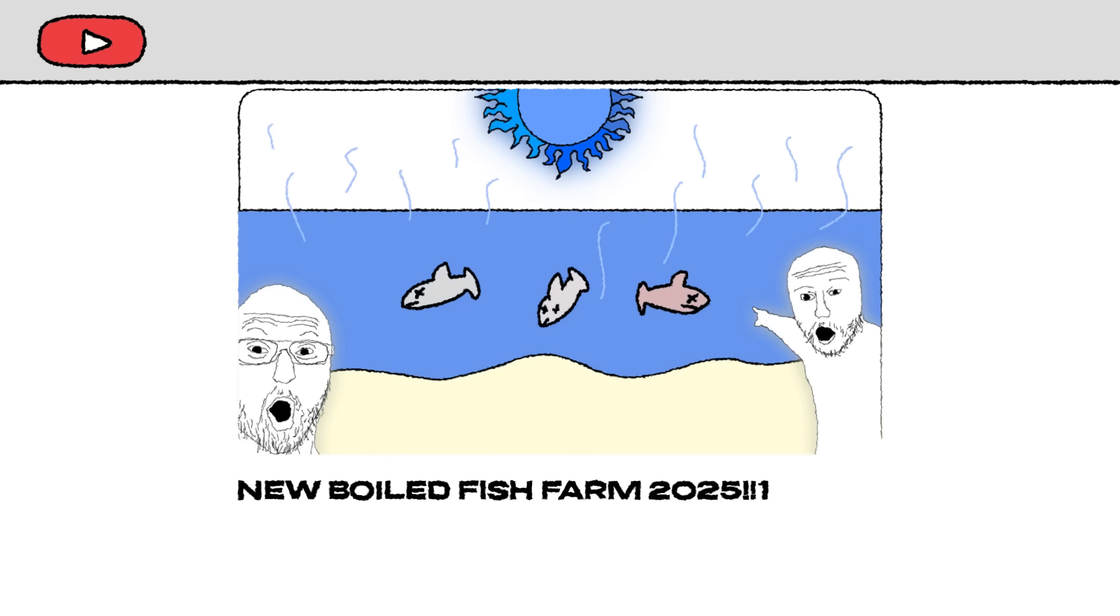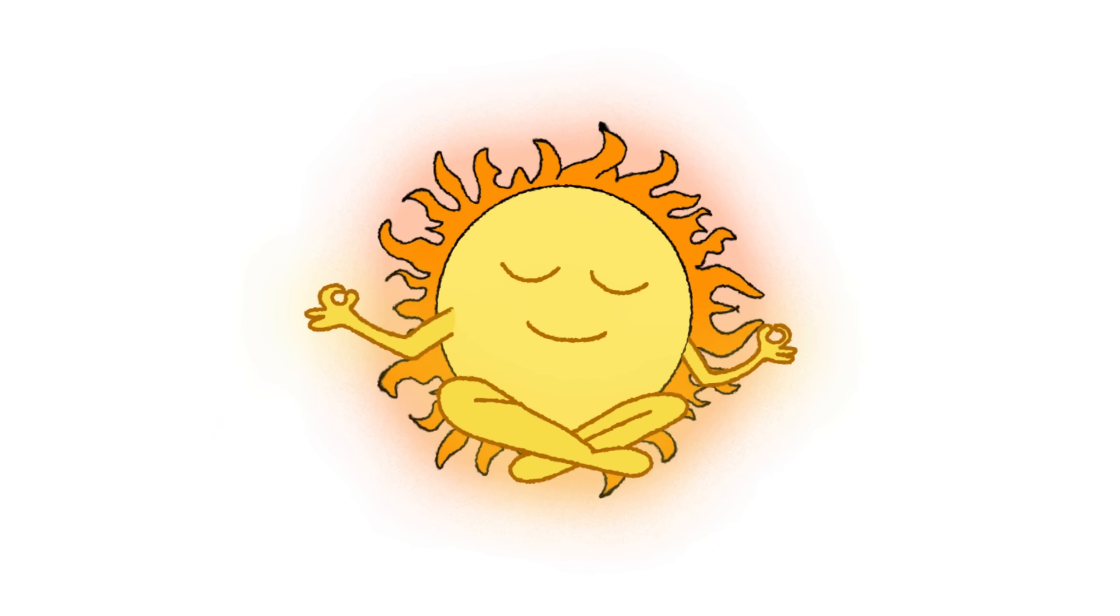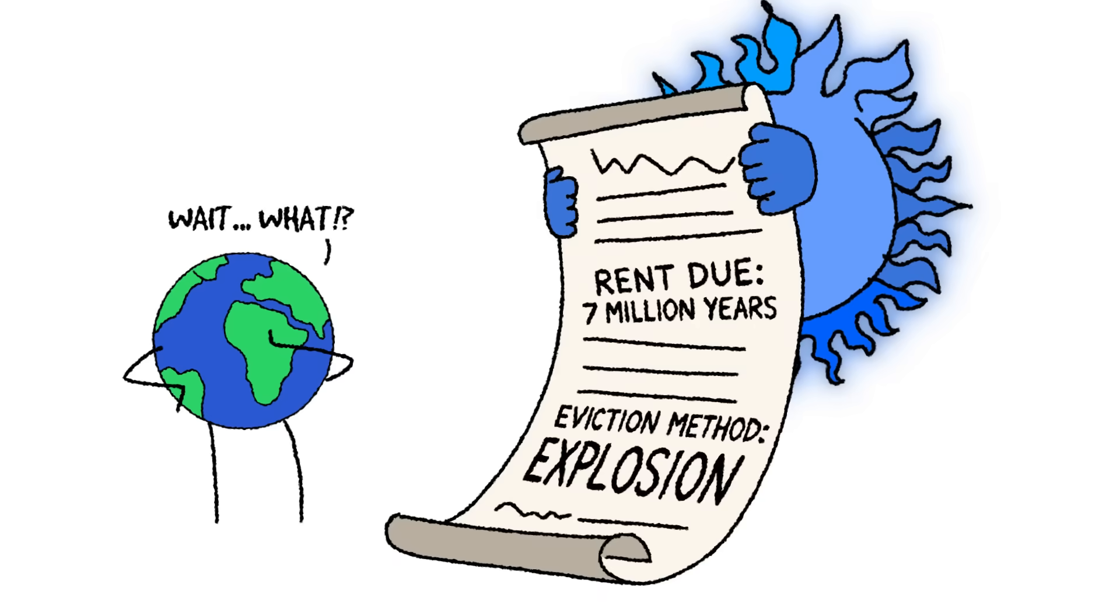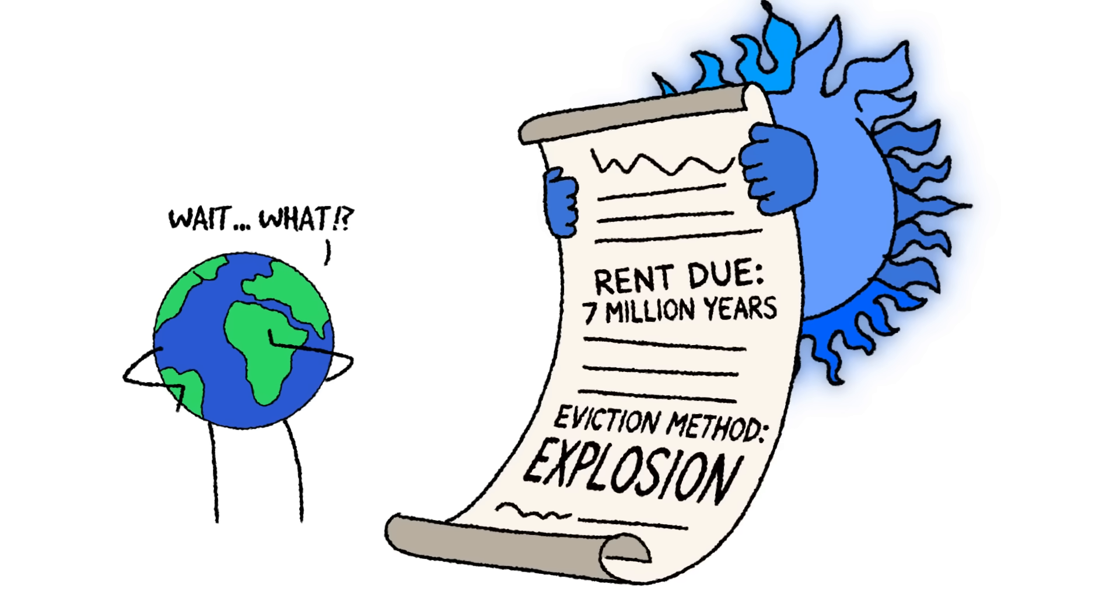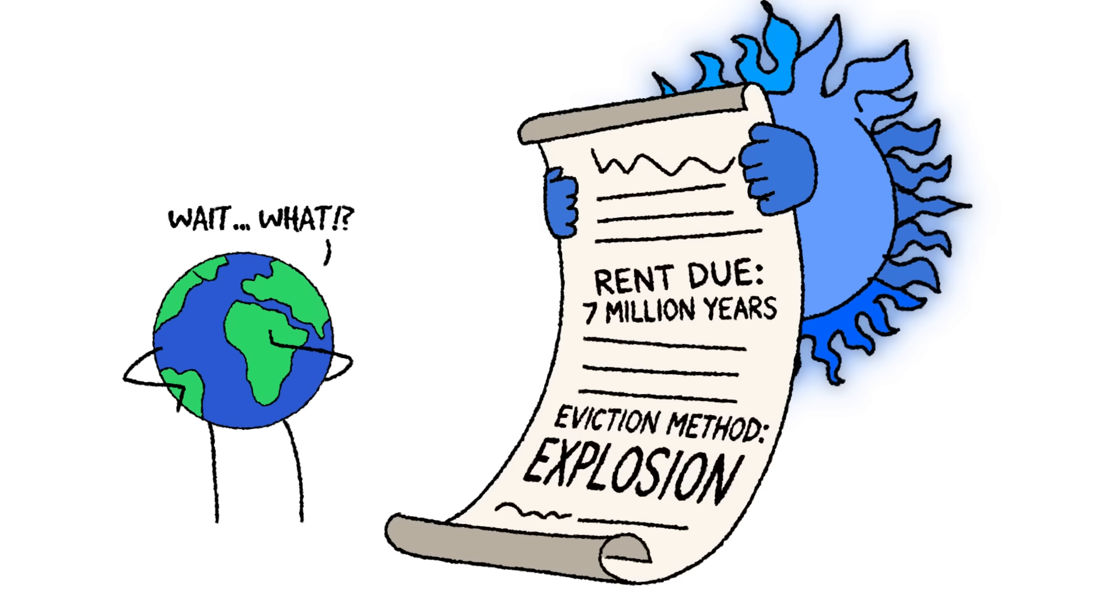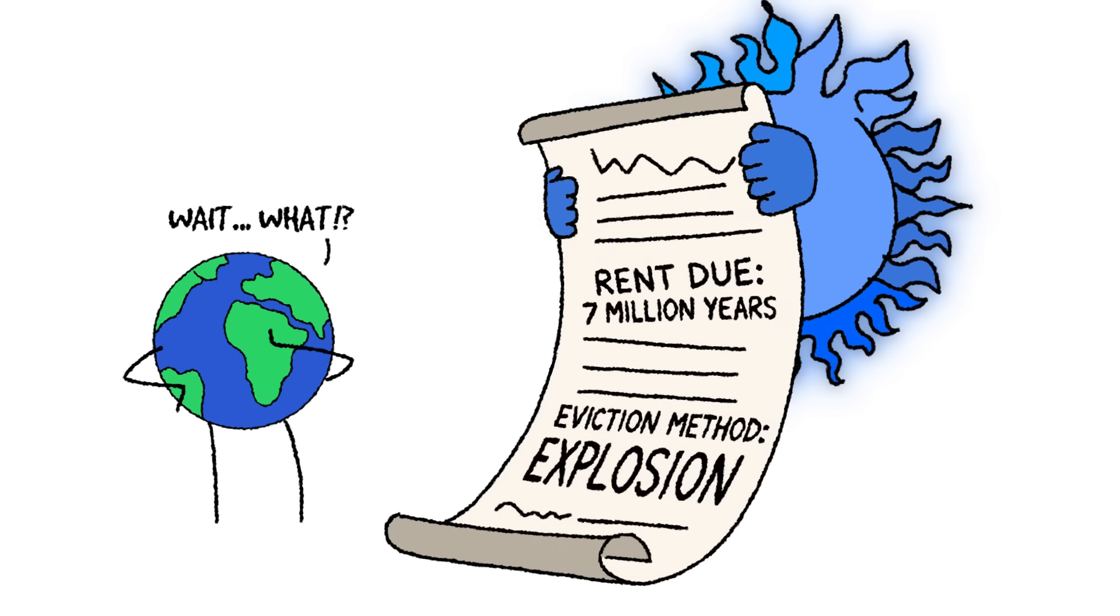But even if, by some miracle, we figured out how to survive, there's another problem. Unlike our sun, which will burn for a comfortable 10 billion years, in just 7 million years it'll collapse under its own weight and explode in a violent supernova, unleashing an amount of energy so powerful it could outshine an entire galaxy. Verdict? You wouldn't even get the chance to regret your decision. Earth would be gone in an instant.